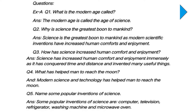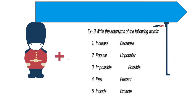Then we have Exercise B of this passage — write the antonyms of the following words. Antonym means opposite. The words are: increase — decrease; popular — unpopular; impossible — possible; past — present; include — exclude. Write down the antonyms in your notebook. The opposites are given here and you can write the answers in your notebook.